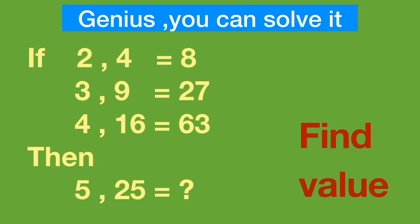Hi, this is a very interesting math puzzle. Input two numbers on the left-hand side and get the result number on the right-hand side. When we input 2 and 4 we get 8, and when we input 3 and 9 we get 27.